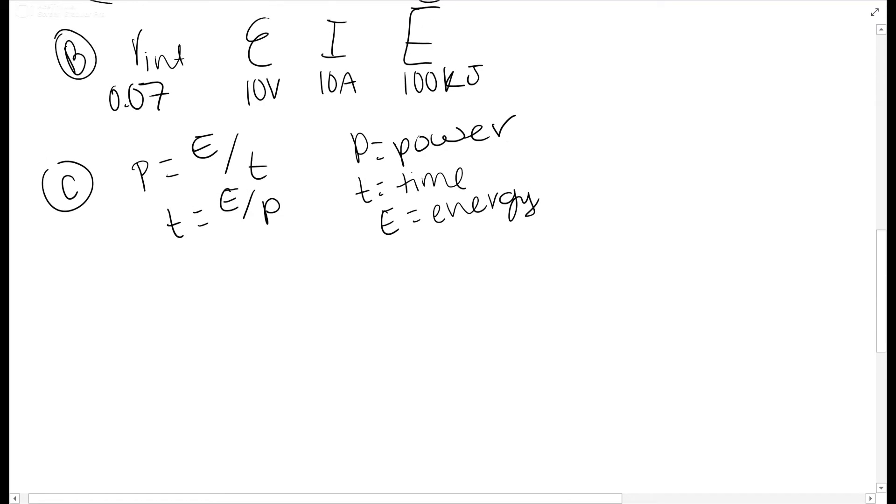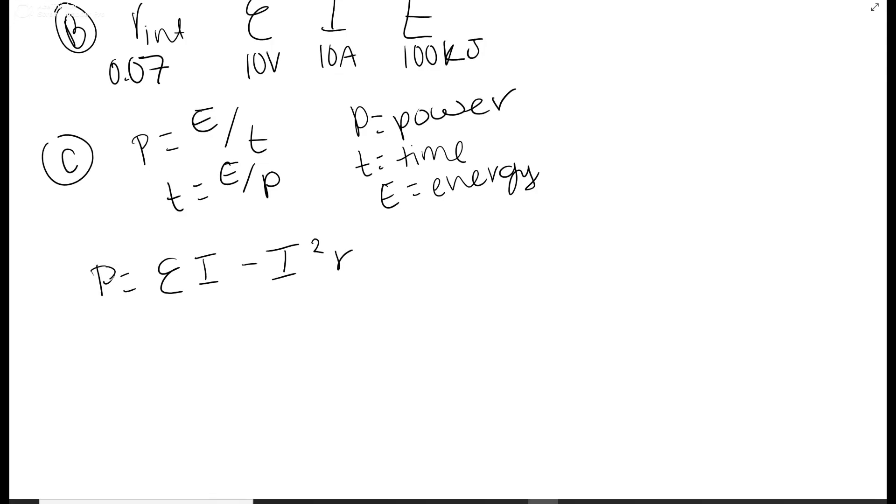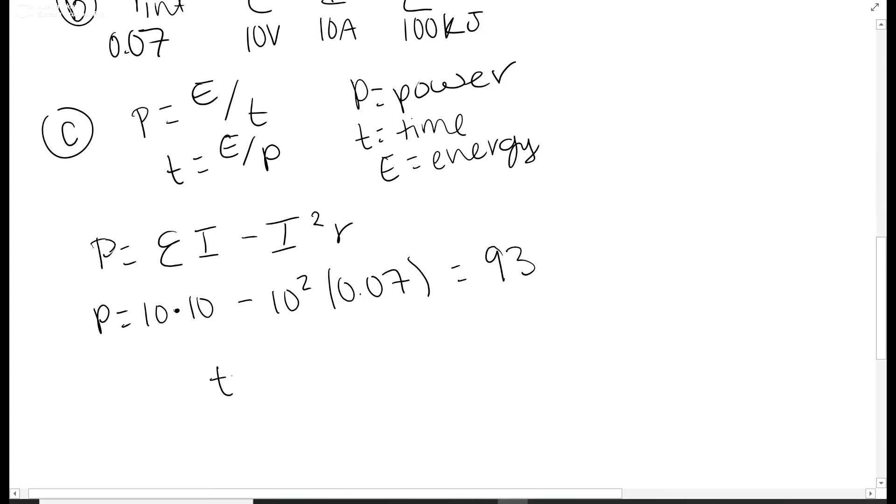You can easily rearrange this to get E over P to solve for time. You're given E, you do have to find P. So you need an equation for P with those variables. P equals 10 times 10 minus 10 squared times 0.07. You solve that out and get 93W. Then T equals 100 kilojoules over 93, which gives 1075.2 seconds or 17.9 minutes.